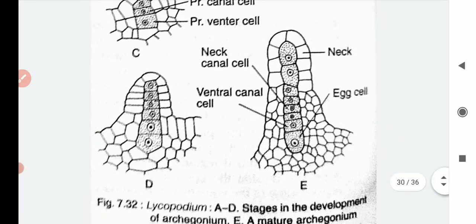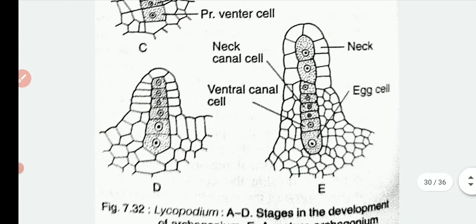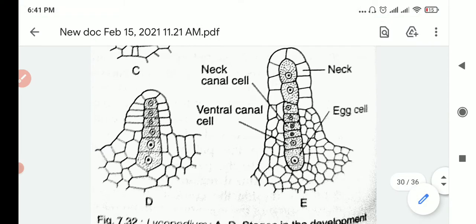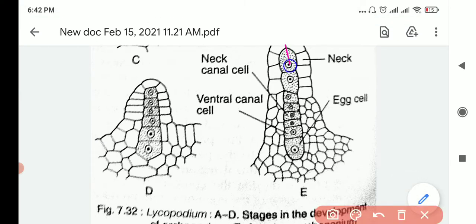This is how the mature archegonium will appear. You have a neck, then you have the neck canal cells, the ventral canal cell, and the egg cell. Remember the antherozoid with the long flagella? This neck cell will disintegrate and form a drain or canal so that the antherozoid can enter and fuse with the egg cell.